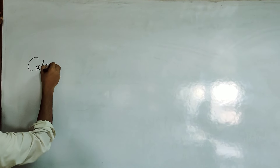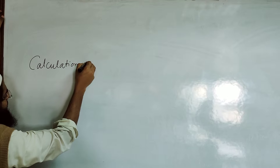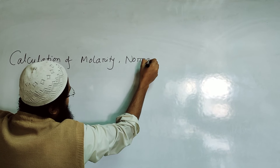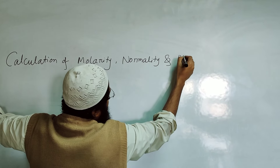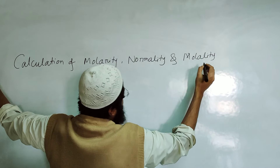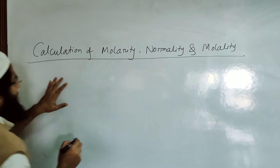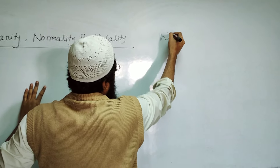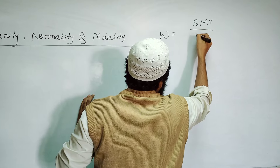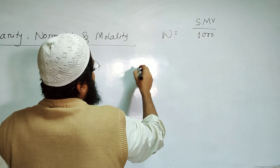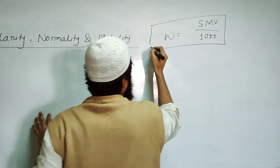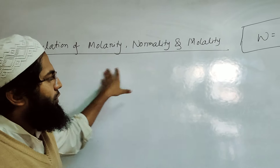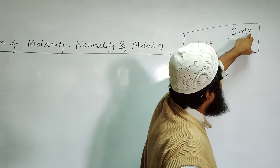Calculation of Molarity, Normality, and Molality. All three can be calculated with the general equation W = SMB / 1000. With this equation, all three things can be calculated, but in the case of each particular calculation, the parameters for W, S, M, and B will be different.